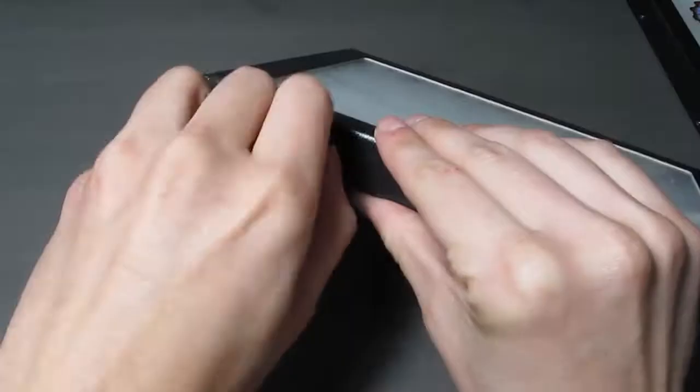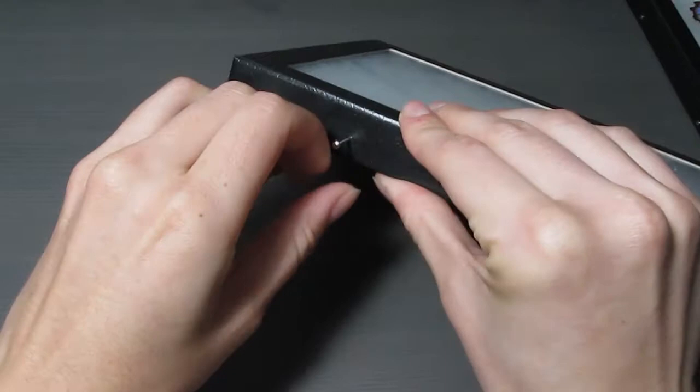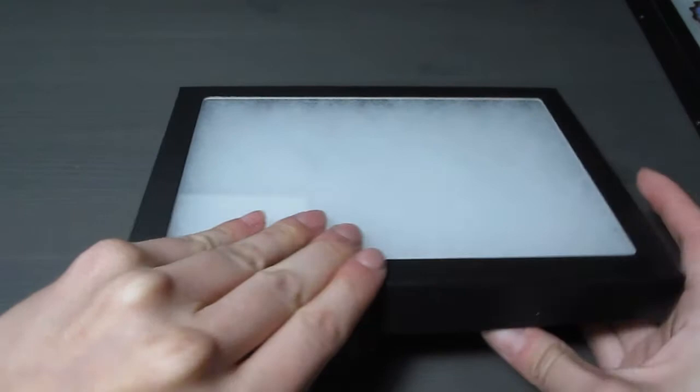Inside the Riker frame is a bed of cotton fiber that will provide a soft backing for the insects and hold it in place while it's framed. We need to make a slight indentation where the body of the butterfly will sit, that way it isn't totally crushed when we put the glass facing back on.